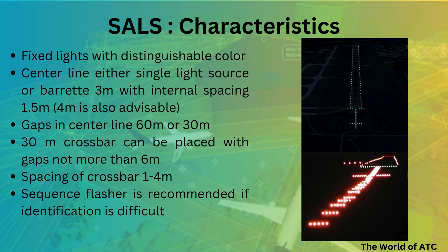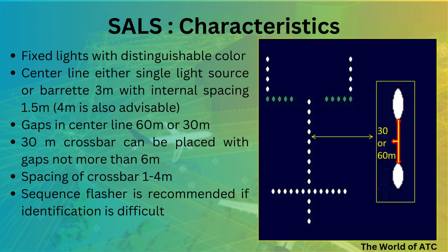According to ICAO Annex 14, a 4-meter barrette is also advisable. This is because if your aerodrome is to be upgraded to a CAT I or CAT II approach lighting system, you will need a barrette of 4 meters, so installing it in advance would be highly beneficial. Gaps in the center line lights would be 60 meters or 30 meters depending on the visibility required, and a 30-meter crossbar may be provided with gaps not more than 6 meters.